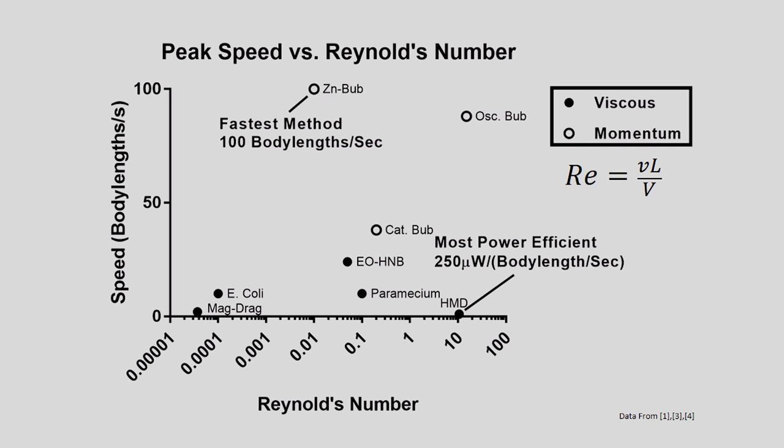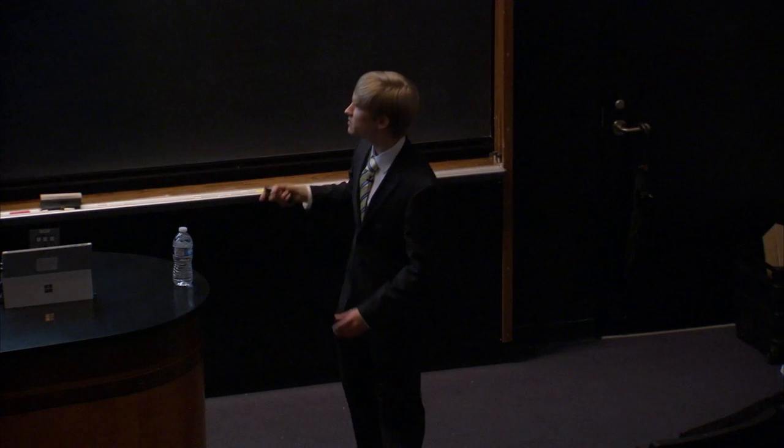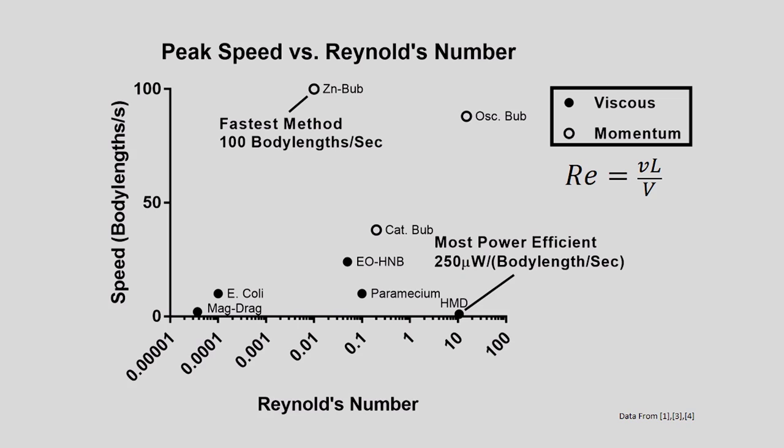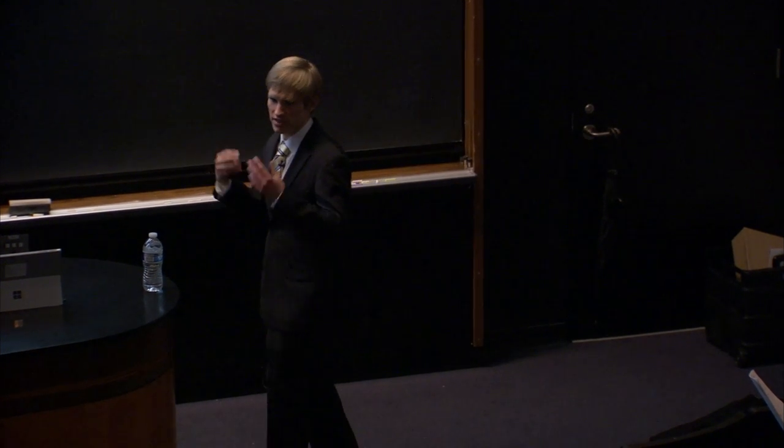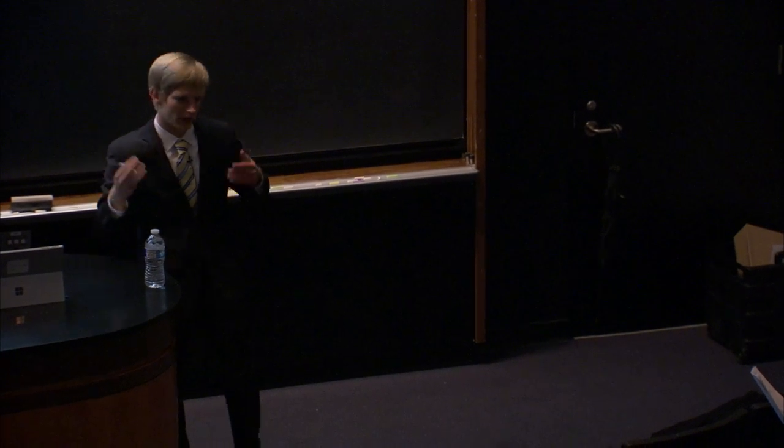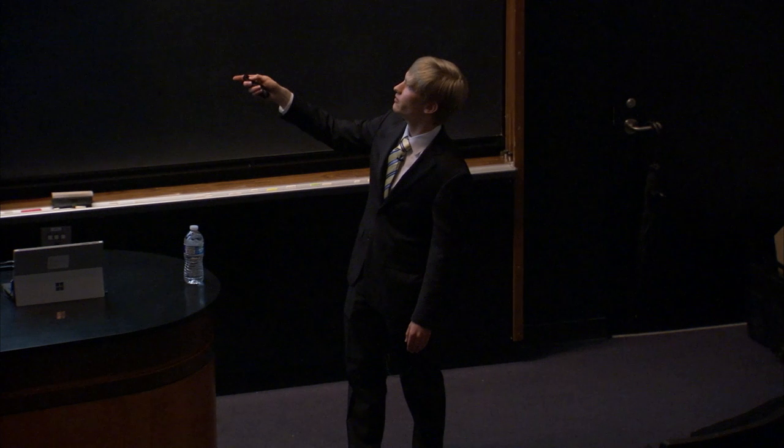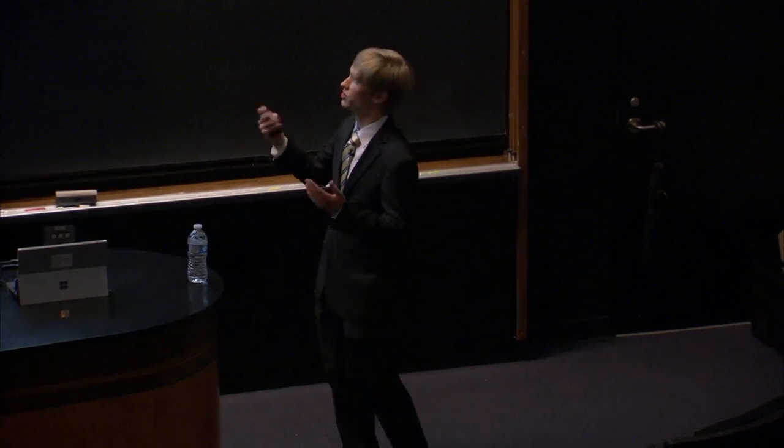On this graph, you'll also note I have a legend over here. The black dots are the devices that use viscous-based momentum or viscous-based propulsion. Viscous-based propulsion is highly efficient because viscous forces are dominating at these low Reynolds numbers. However, you might notice they're fairly slow. So while they're efficient and have the most power efficient among them, momentum forces tend to be a lot faster. But because of their low efficiency in terms of body length per second per microwatt that they consume, they don't tend to last very long. This one, the 100 body lengths per second, only lasted about a fraction of a second.